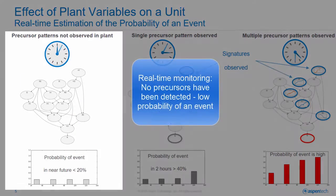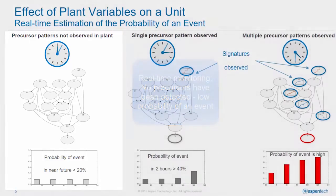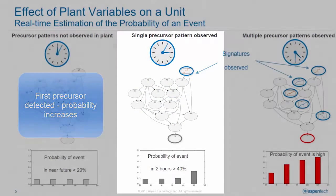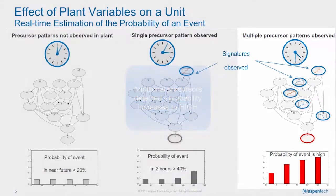In the first panel, no precursors have been detected and the calculated probability of an event is inconsequential. In the second panel, a single precursor signature has been detected. In the third panel, several precursor signatures have been detected. The probability of an event is now significant.